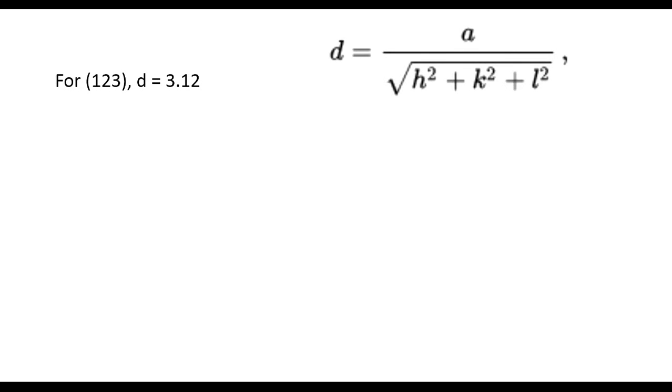In the question, it is given for the plane (1,2,3), the d value separation is 3.12. From this, we can calculate the value of a. For that, the square root of h squared plus k squared plus l squared equals root 14. From that, we can find the value of a, which is 3.12 times root 14.